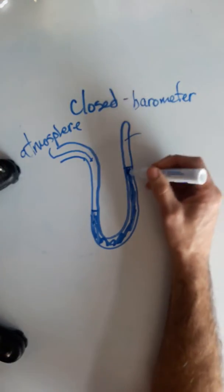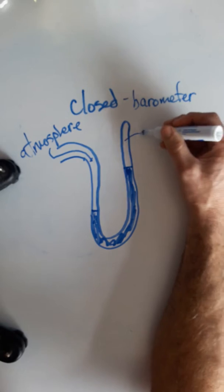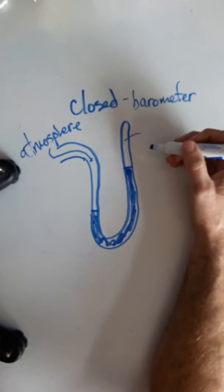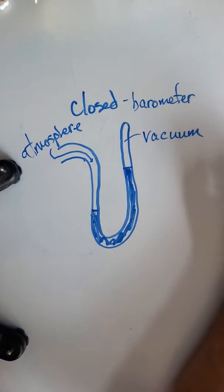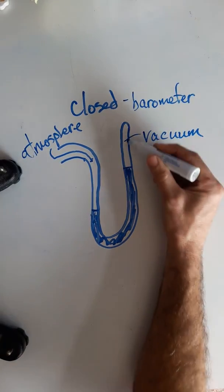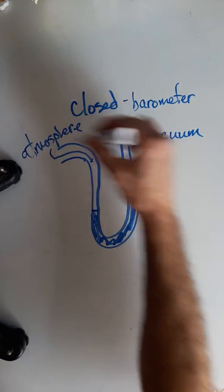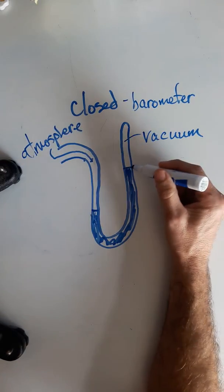And here, this space here, this is nothing. This is the absence of any air, any gas, also known as a vacuum. So there's nothing, no force pushing here. So this would be a good way to measure the atmospheric pressure.